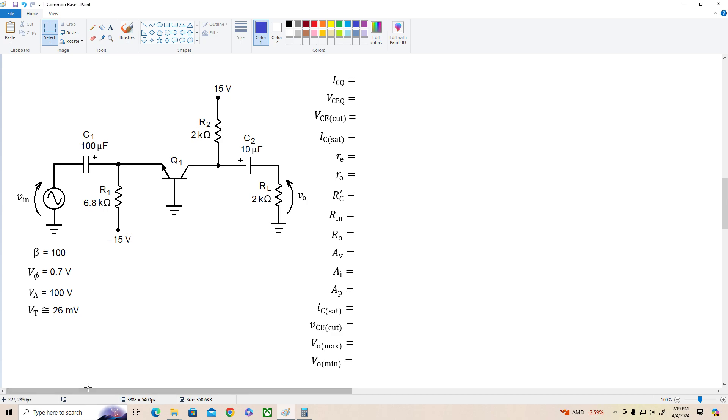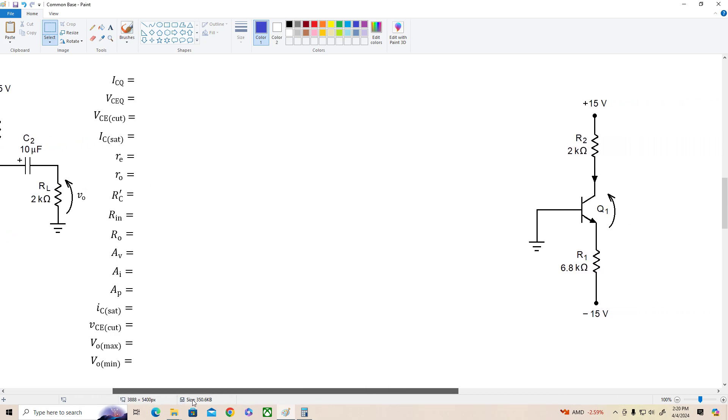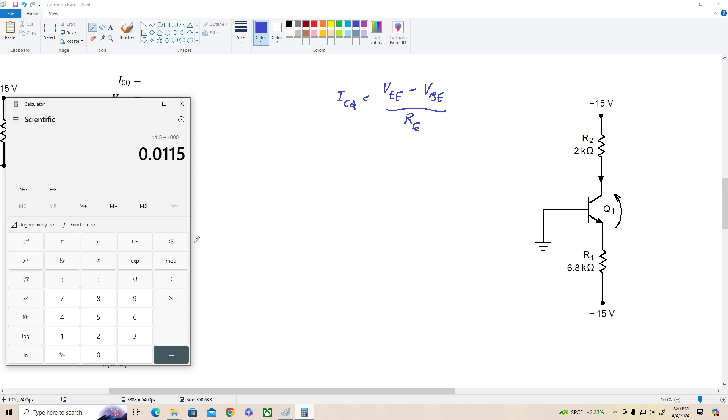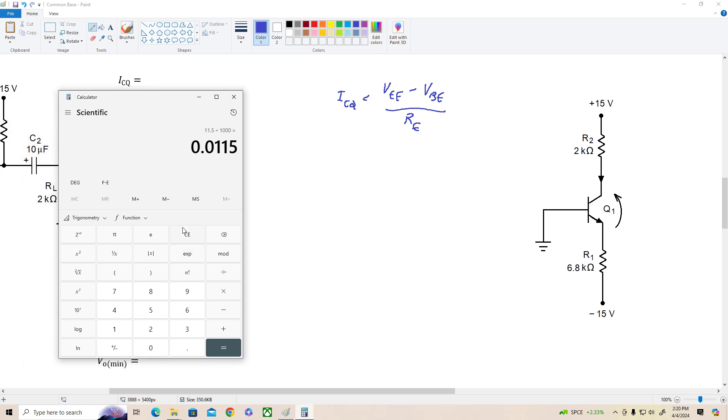Now I'm going to show you what it actually looks like, and here it is. So let's go ahead and determine all of our DC values here, starting with ICQ. For this circuit, ICQ is equal to VEE minus VBE divided by RE. We have no base resistor to worry about, so this is very simple. And let's call up our calculator. VEE is 15 minus 0.7 is 14.3 volts divided by 6800 is about 2.1 milliamps.